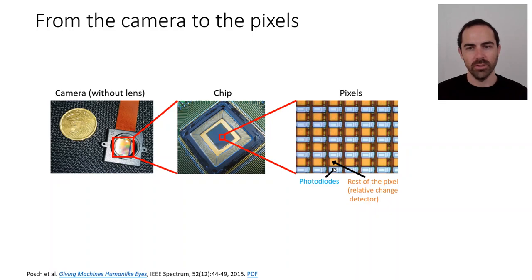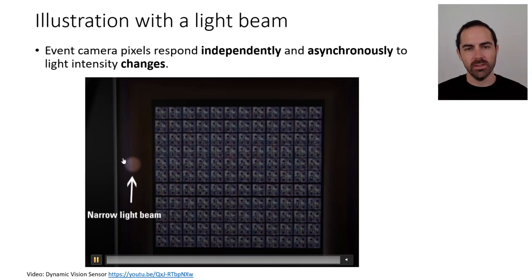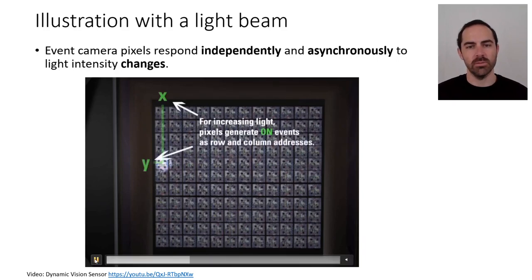So if we take this array of pixels with an animation, imagine that we have a light beam and that is going to move from left to right. Remember that every pixel of these event-based cameras responds independently and asynchronously to light intensity changes. So what happens is as the light beam goes in and touches one pixel, in this pixel intensity increased. There was an increase and therefore there is what is called an on event that is transmitting this x and y coordinate of the pixel where it happened.